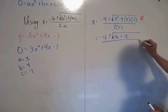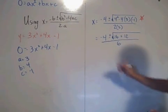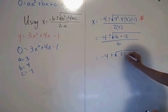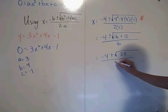So this is all over 6. So then we have negative 4 plus or minus the square root of 28 all divided by 6.